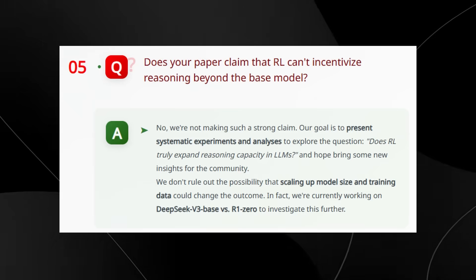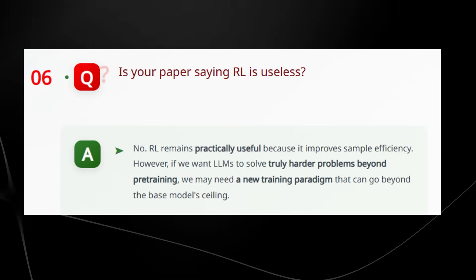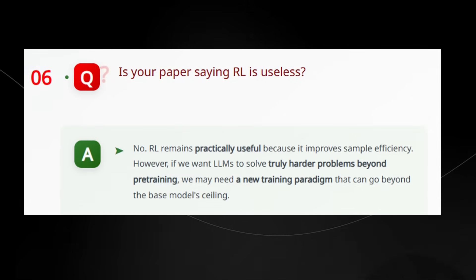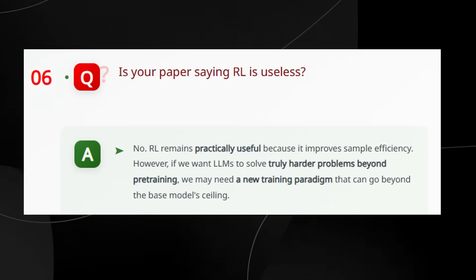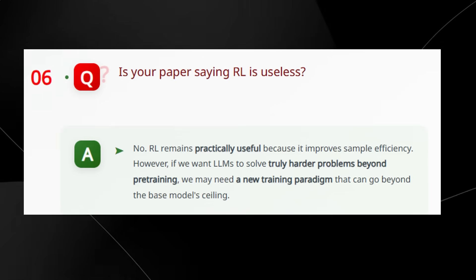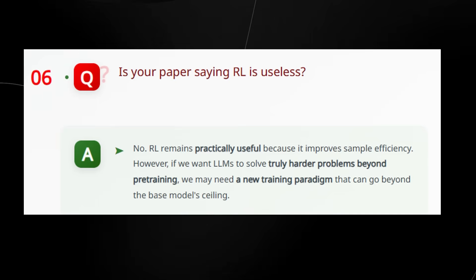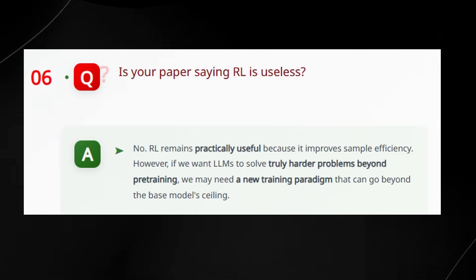They're basically just saying we need to see proof of this once again. They basically say that no, reinforcement is not useless because it improves the sample efficiency, but if we want to solve truly harder problems in AI, we may need a new training paradigm that can go beyond the base model ceiling. So they're basically saying that look, these models, we need a new way to be able to get new knowledge from them, and that's of course true kind of intelligence that we're really seeking.